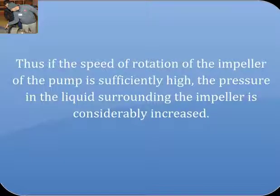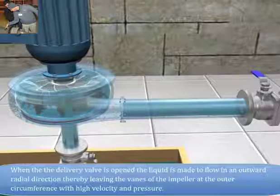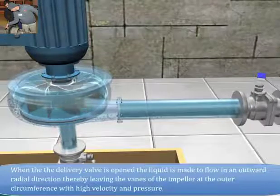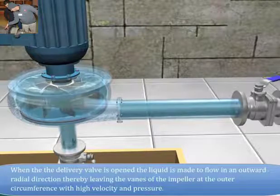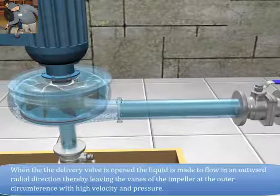Thus, if the speed of rotation of the impeller of the pump is sufficiently high, the pressure in the liquid surrounding the impeller is considerably increased. When the delivery valve is opened, the liquid is made to flow in an outward radial direction, thereby leaving the vanes of the impeller at the outer circumference with high velocity and pressure.